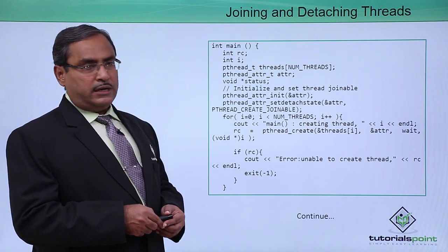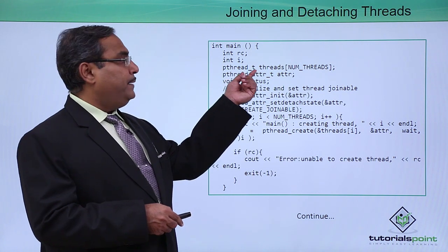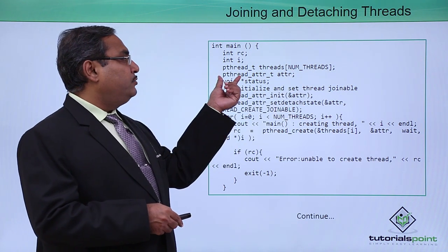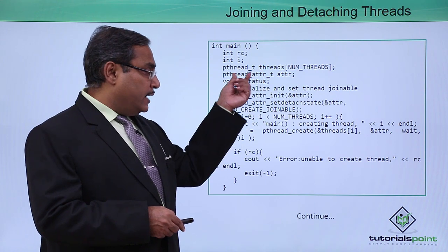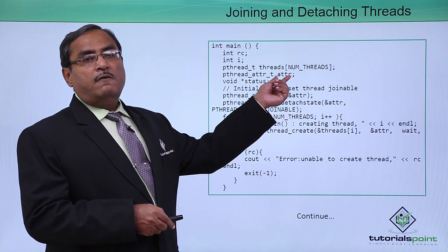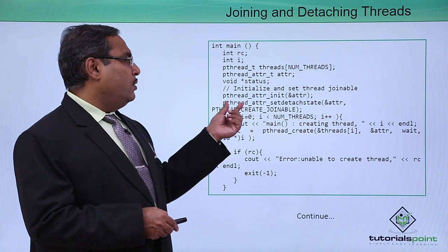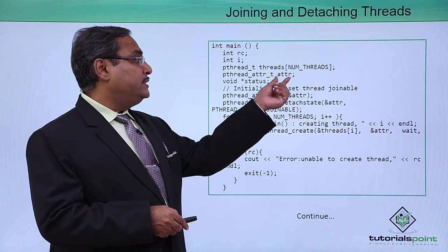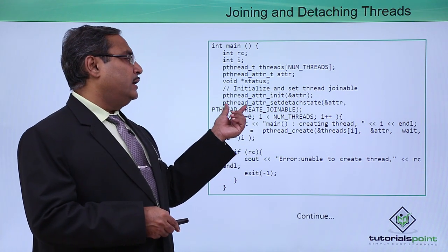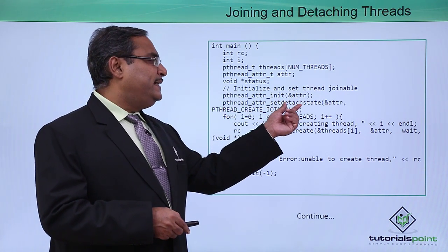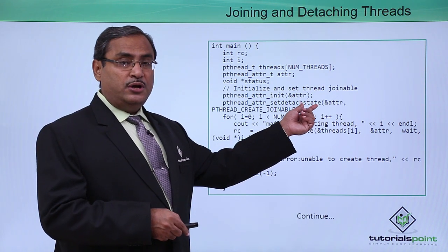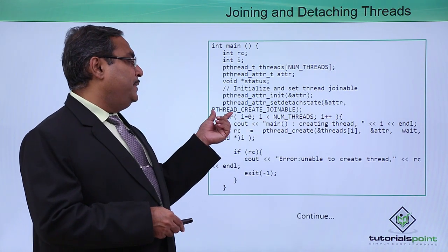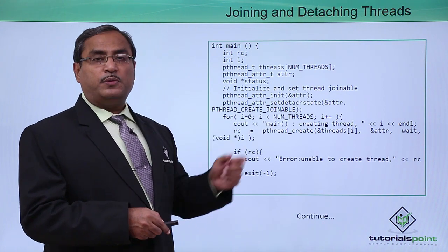Here is the main function. We have defined a pthread_t type array named 'threads' with 5 locations, and a pthread_attr_t variable named 'attr'. We call pthread_attr_init passing the reference of attr, then call pthread_attr_setdetachstate with ampersand-attr and PTHREAD_CREATE_JOINABLE, specifying that the threads are joinable.